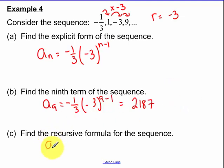Writing a recursive formula. We take our previous term and we multiply our common ratio by what the previous term was. Again, make sure you're telling me that the first term is negative one-third.